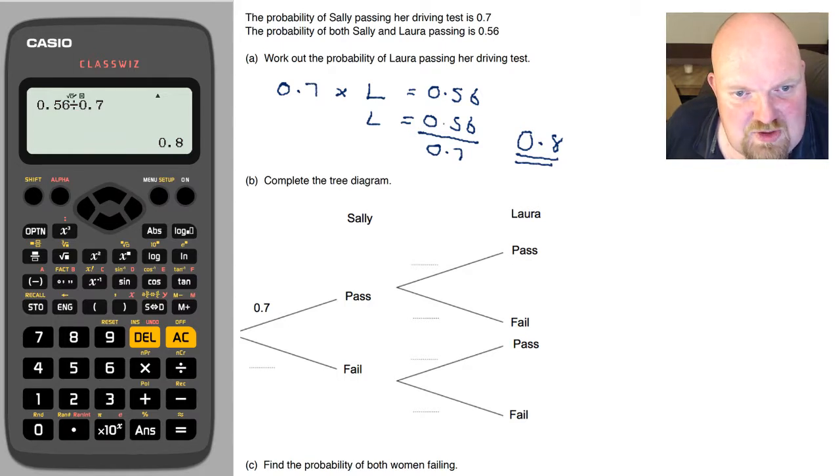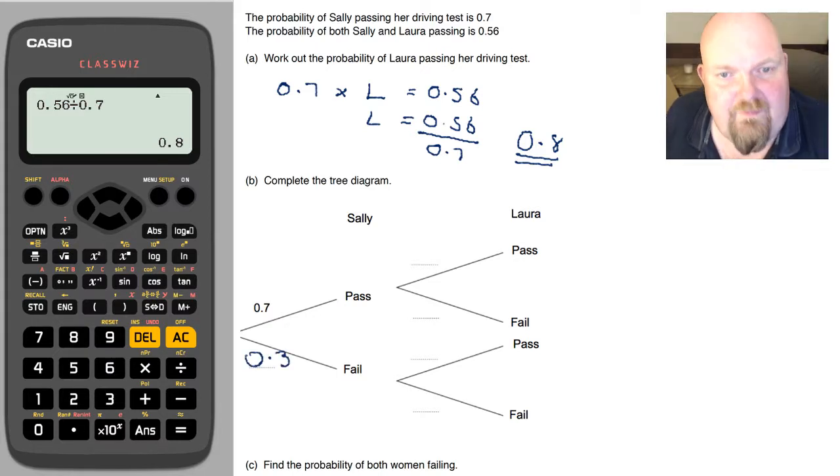So if the probability that she passes is 0.7, then the probability that she fails has got to be 0.3. We now know that the probability that Laura passes is 0.8,